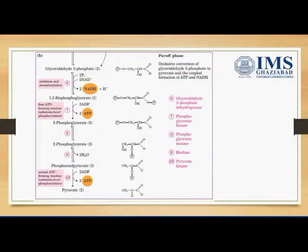Glyceraldehyde-3-phosphate will first be converted into 1,3-bisphosphoglycerate with the help of the enzyme glyceraldehyde-3-phosphate dehydrogenase. Then, with the help of phosphoglycerate kinase, which utilizes one ADP molecule and produces one ATP molecule, it will get converted into 3-phosphoglycerate. Next, 3-phosphoglycerate will get converted into 2-phosphoglycerate with the help of the enzyme mutase.